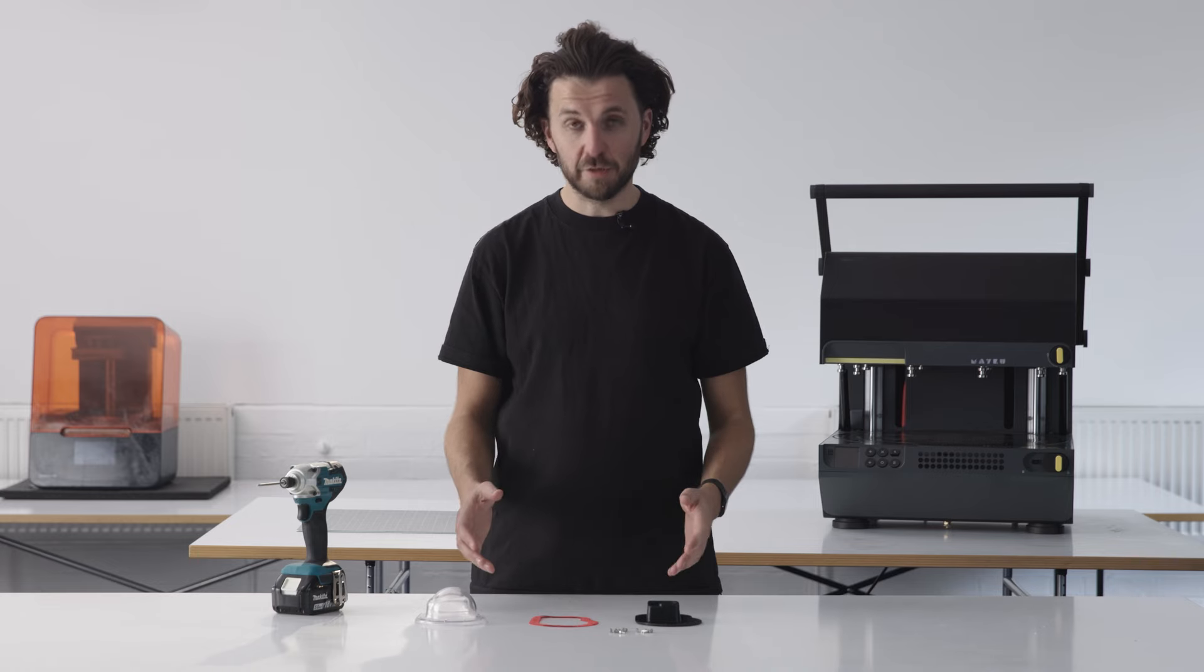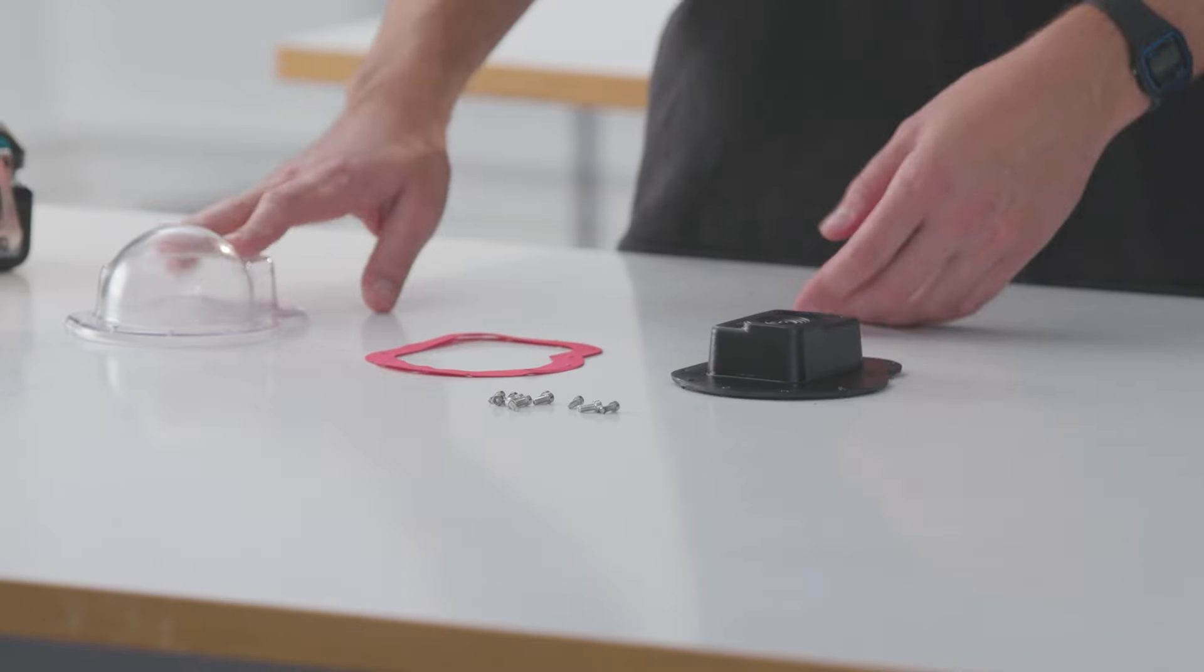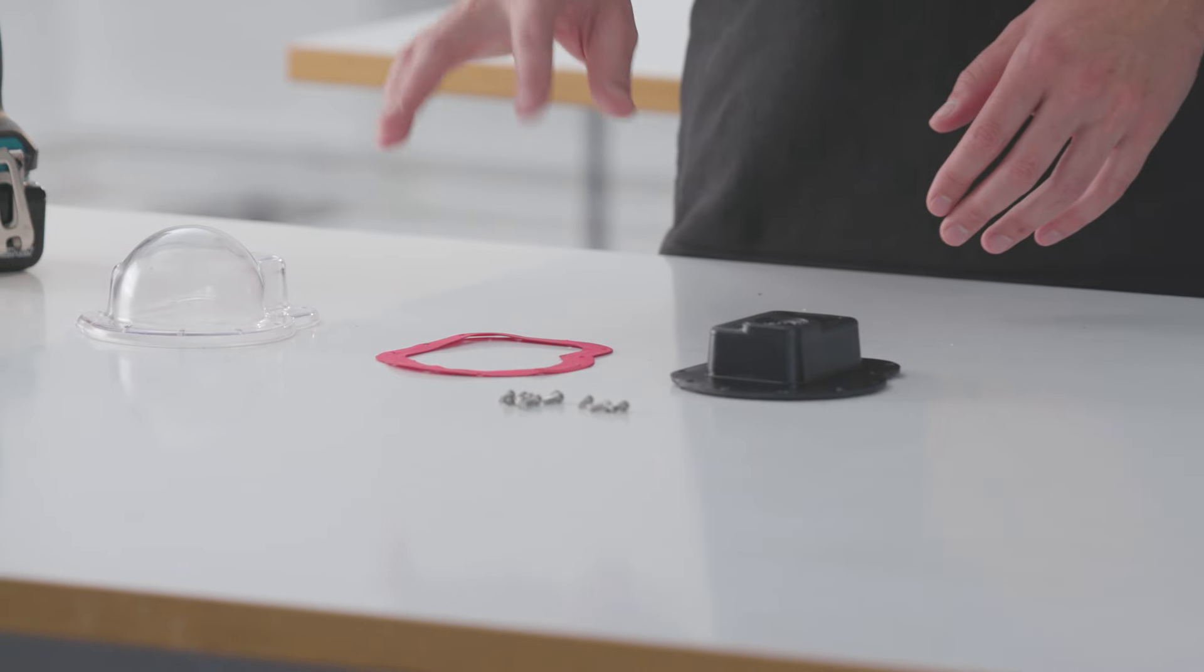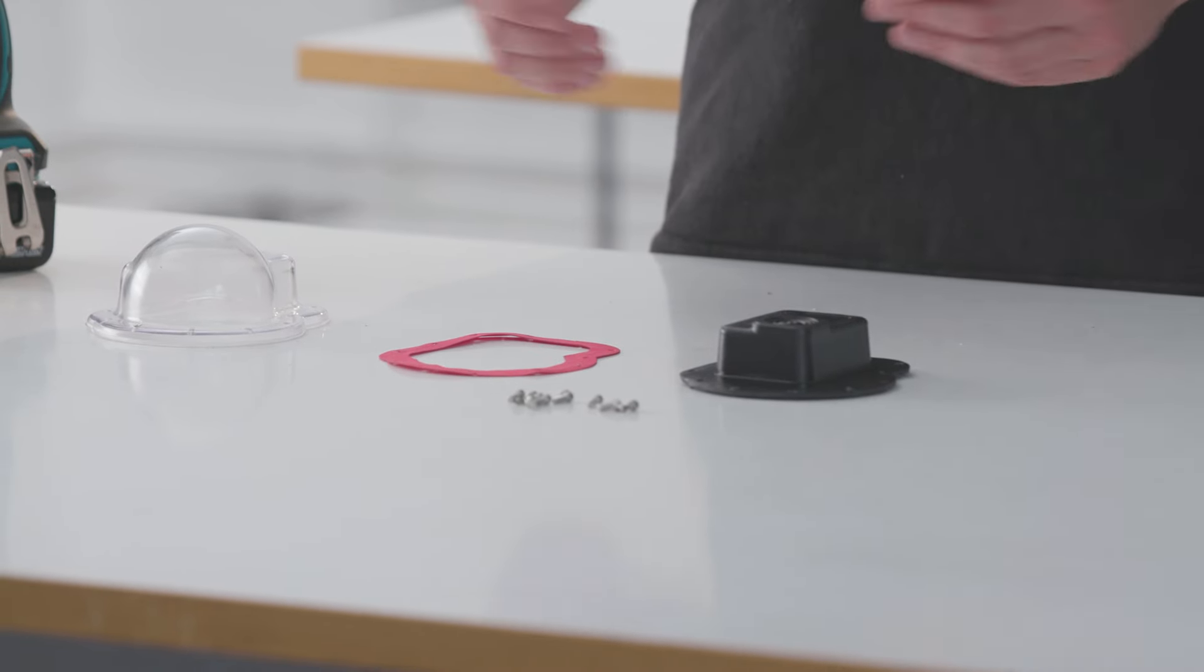Now we have our final parts ready for assembly. We've got our PETG piece and our hips piece, and this is a foam gasket that we've cut out on the laser cutter.